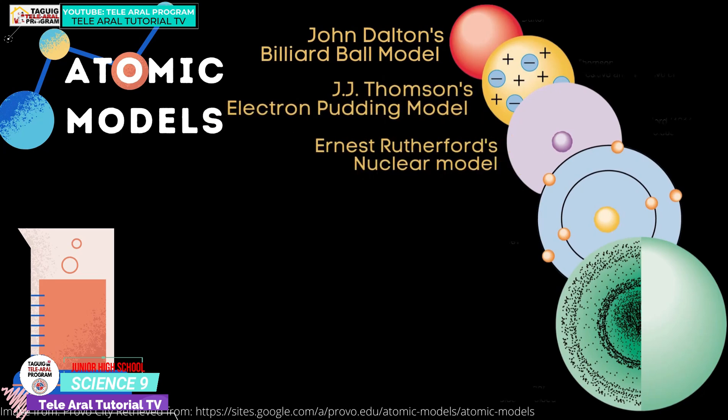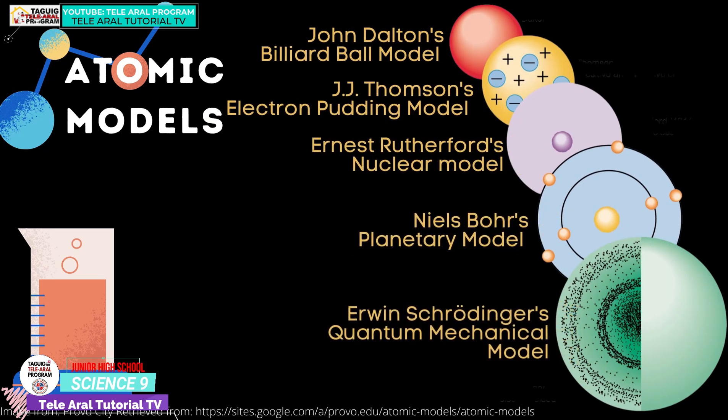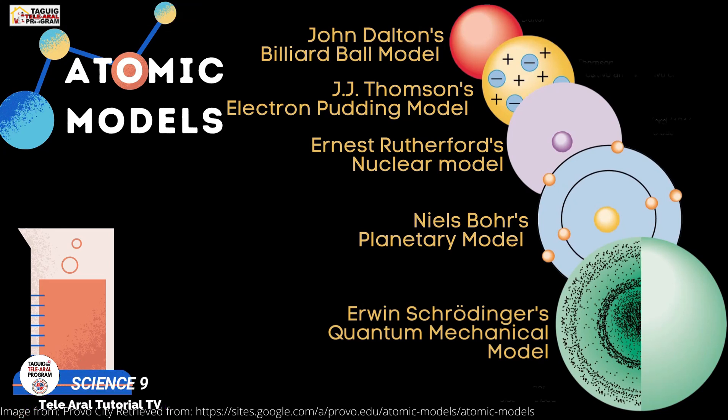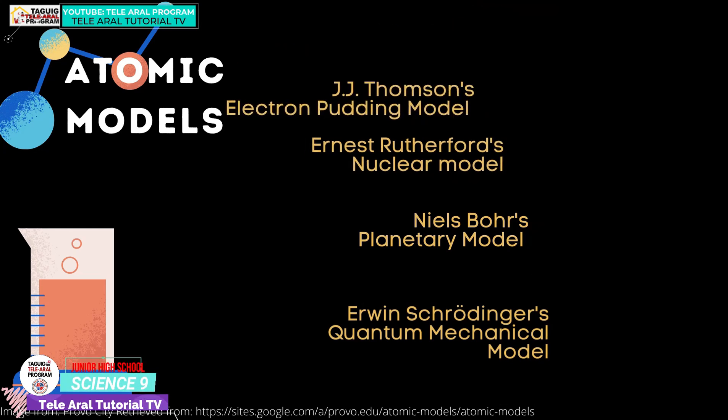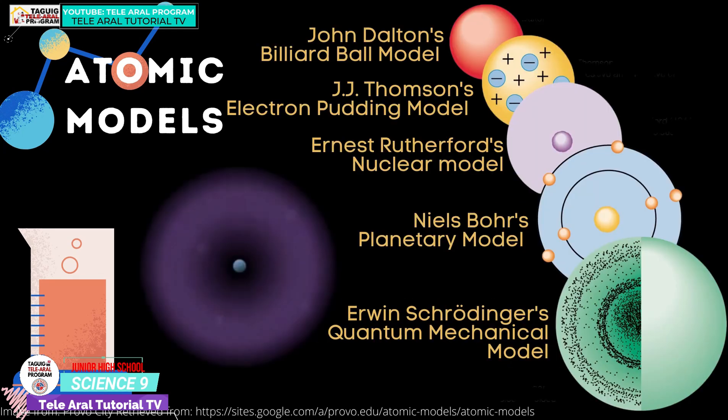You have discussed before how the atomic model evolved from Dalton's Billiard Ball model to the quantum mechanical model of Erwin Schrödinger. Due to scientific advancements, multiple observations of the atoms, and mathematical calculations, locating the exact position of the electron is impossible. But they can be found in this region of space where it is likely to be found, surrounding a nucleus known as the orbital.